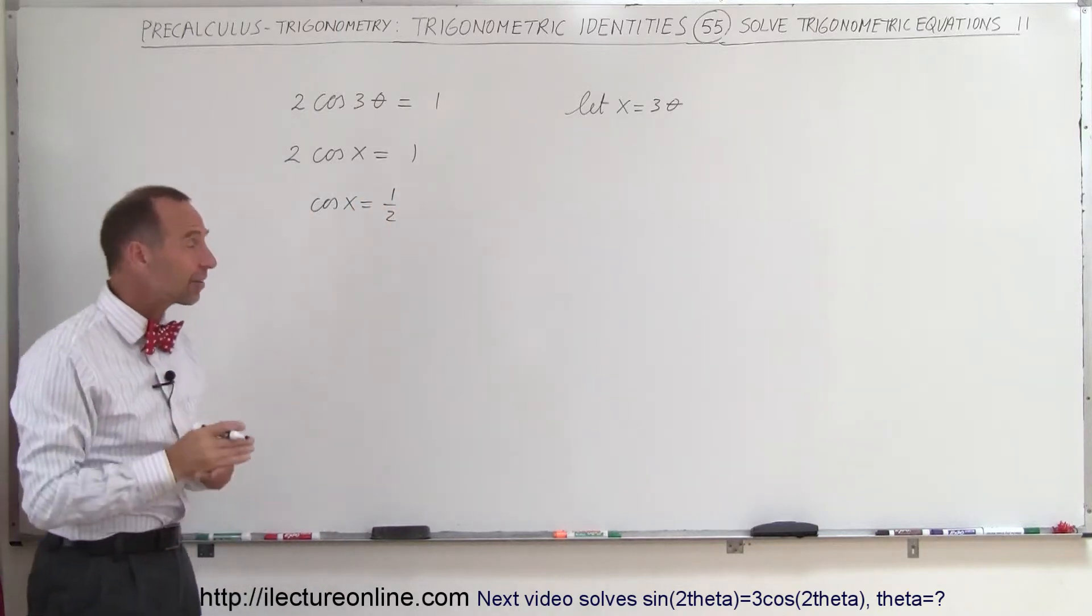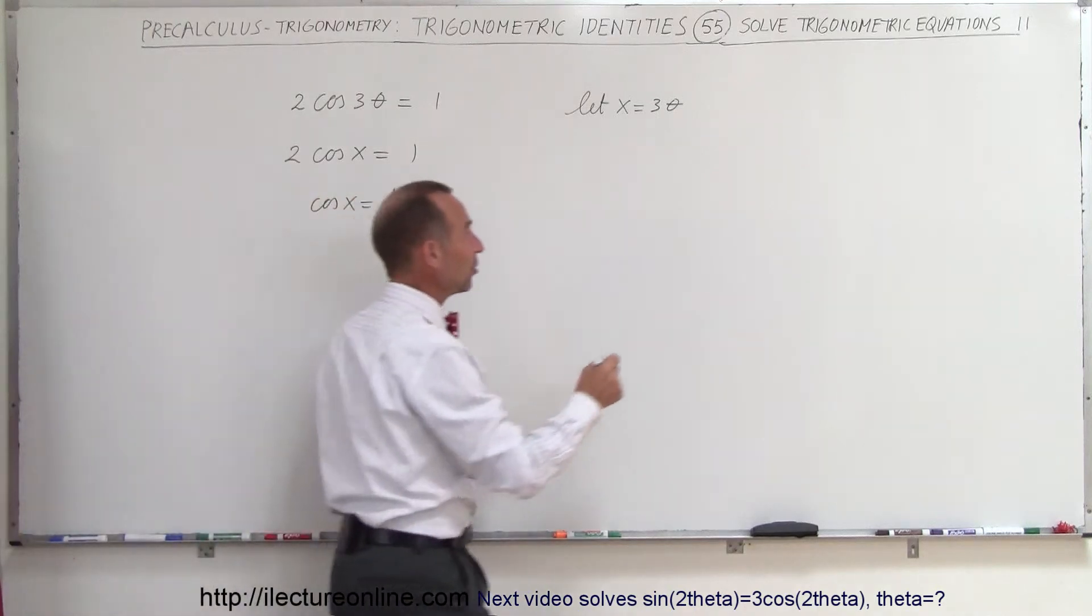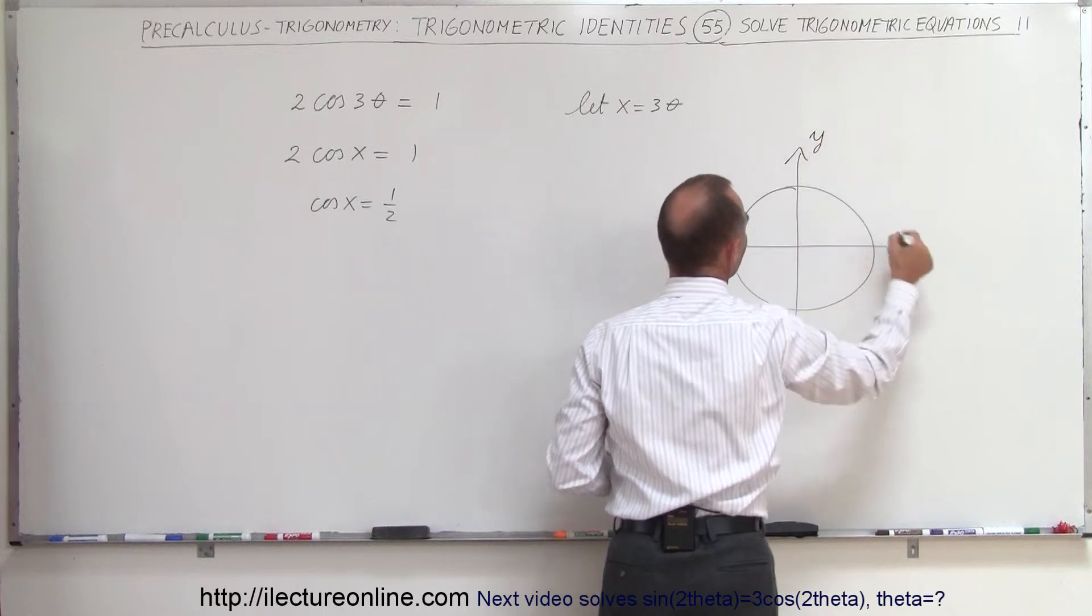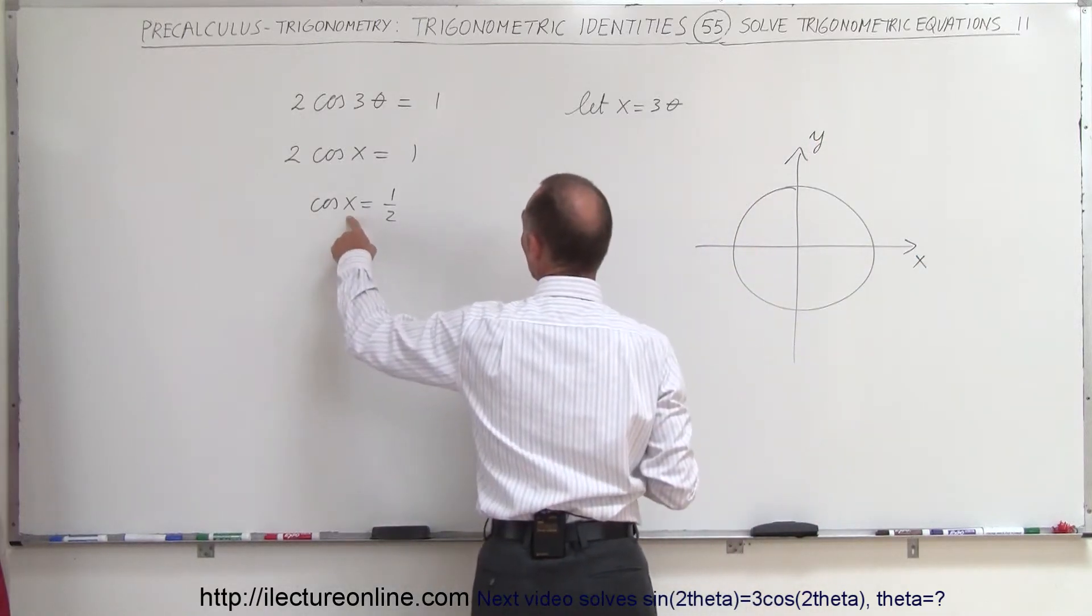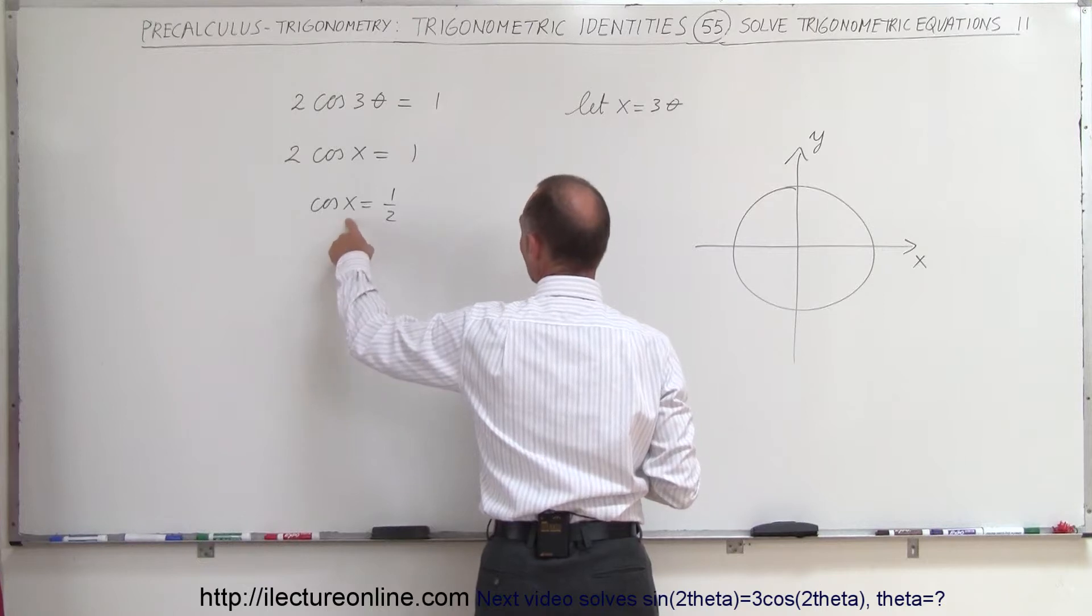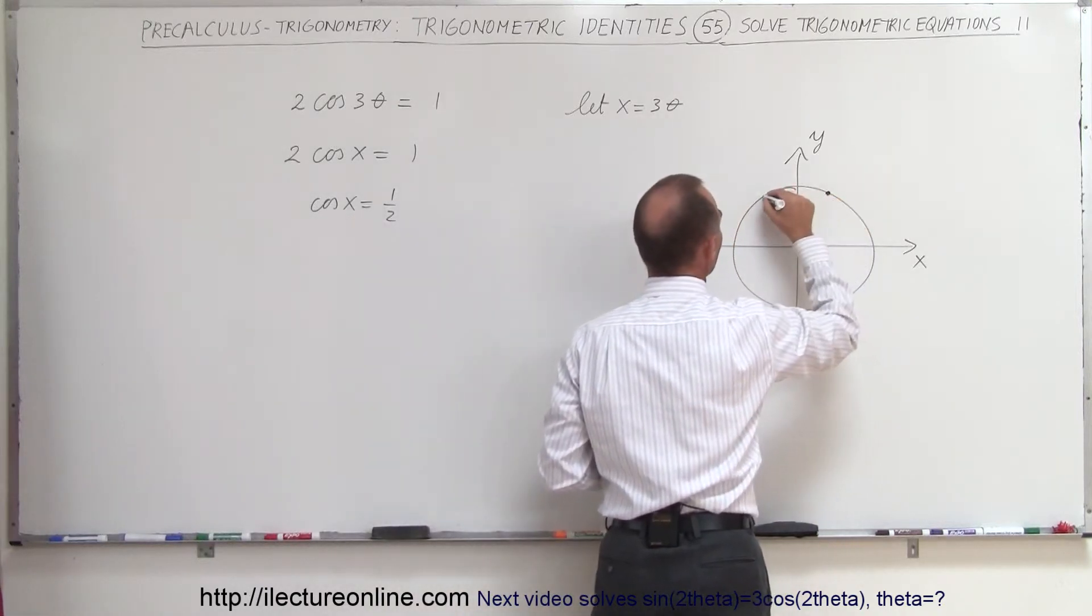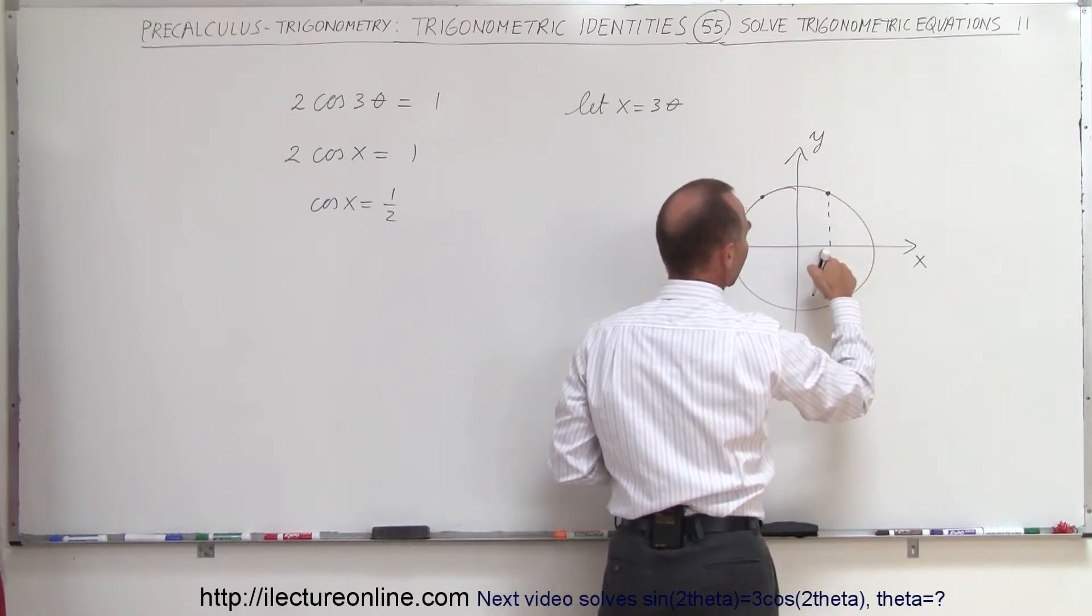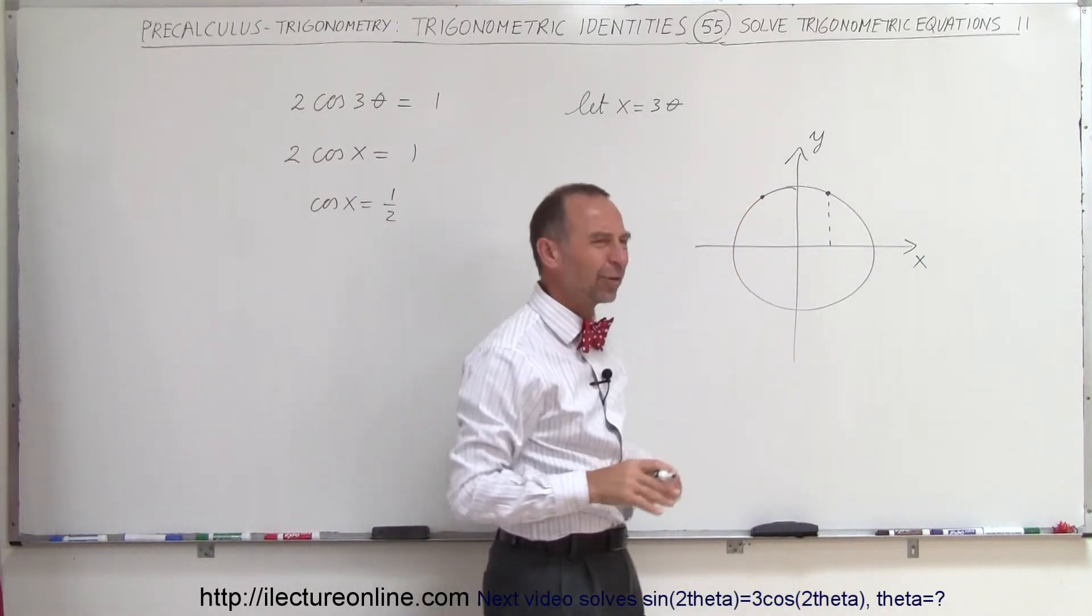So now we're looking for the value of x that makes the cosine of x equal to 1 half. Remember on the unit circle, we have the y-axis here, we have the x-axis here. We're looking for two values for x such that when I take the cosine of that, it's equal to 1 half. So it would be right there and right there. Notice that this is the cosine of the angle.